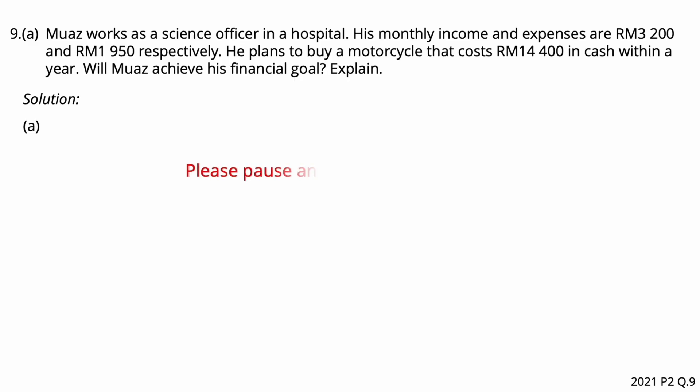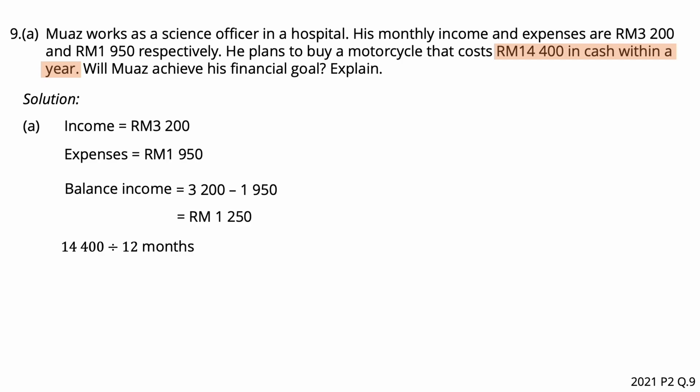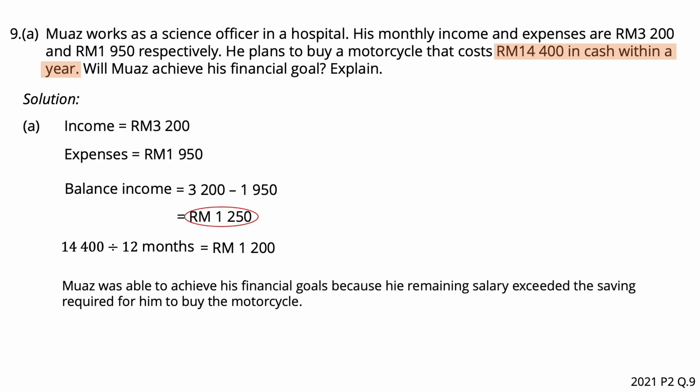Question number 9. Please pause the video and read the question. Moaz has a monthly income of RM3,200 Malaysia and monthly expenses of RM1,950 Malaysia. His balance income after deducting the monthly expenses, RM3,200 minus RM1,950, is equal to RM1,250 Malaysia. The motorcycle he plans to buy costs RM14,400 in cash, paid by installment within a year. RM14,400 divided by 12 is equal to RM1,200. Compared to his balance income RM1,250, Moaz was able to achieve his financial goals because his remaining salary exceeded the savings required for him to buy the motorcycle.